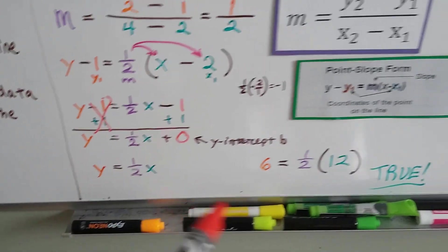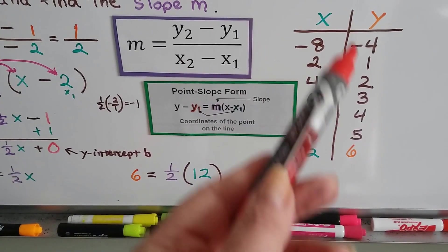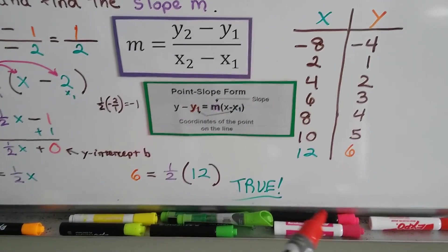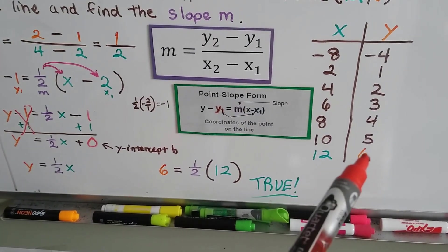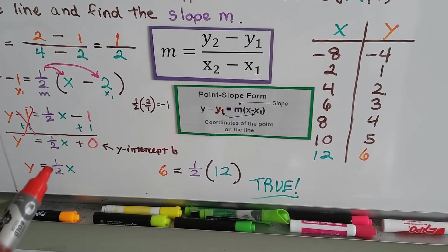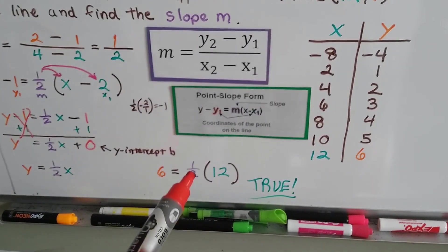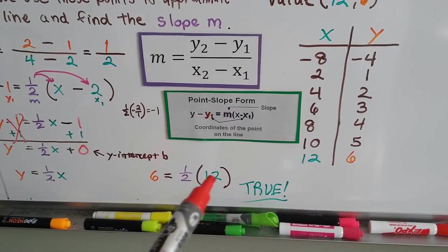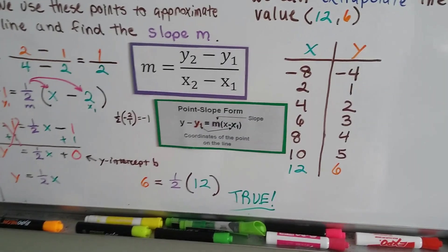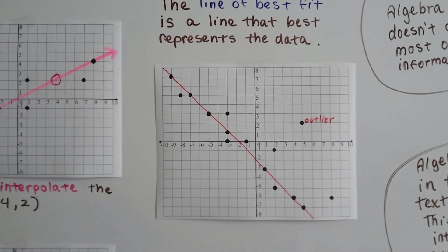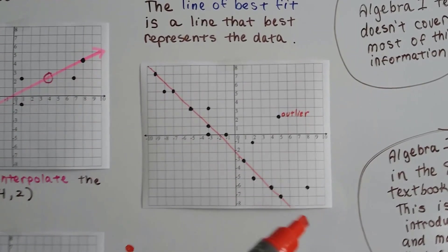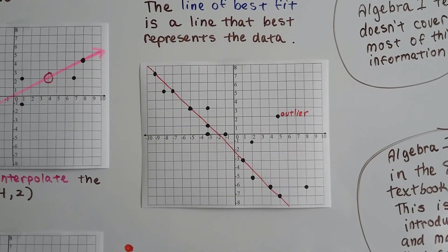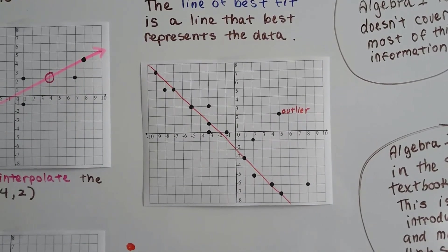And we don't have to write the plus zero. We can just write y equals half x. And this equation should be made true by all of these values that we found on the line. So let's try it. So if we have y, then let's use the 6, and it should equal half times x. Half times 12, well, yeah, that is a 6, so it is true. It made it true. So remember, the line of best fit is the line that goes through the data, the scatterplot with all the clusters that makes it represent the data the best.